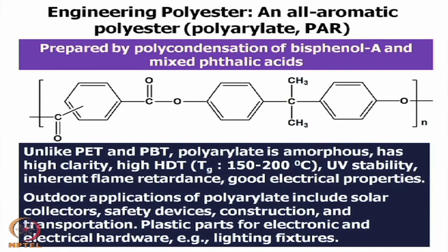In PET and PBT, some part of the repeat unit was aliphatic and other part was aromatic. Now, a polyester can be made fully aromatic — that means both the acid part as well as the alcohol part could be aromatic. That is known as all-aromatic polyester, known as polyarylate, PAR.